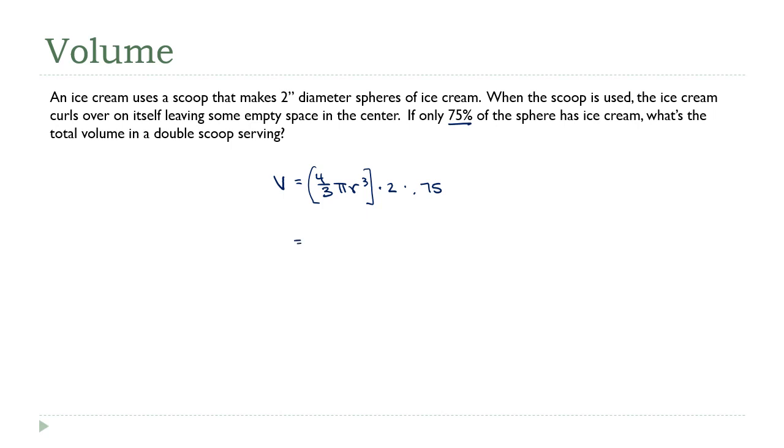All right, so the radius, the diameter is two inches, which means the radius is going to be one inch, so this is four-thirds times pi times one cubed times two times 0.75, that's 1.5.